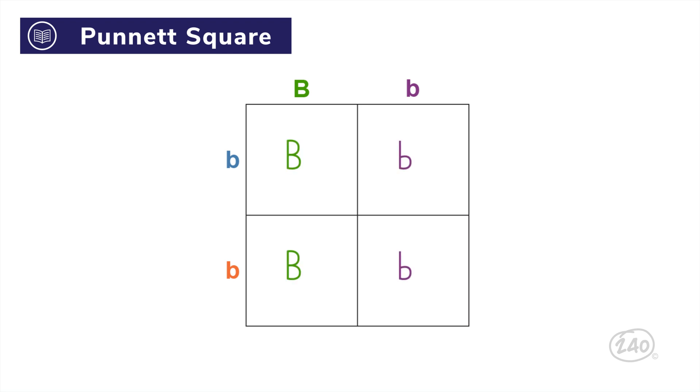We'll fill in the Punnett square by carrying the top parent's genes into each box directly below it. Next, we'll carry the genes from the parent on the left into each box on the right. Finally, we'll analyze the genotypes and phenotypes of the results. Because there are four boxes, each box represents a 25% chance of getting an offspring with that genotype.